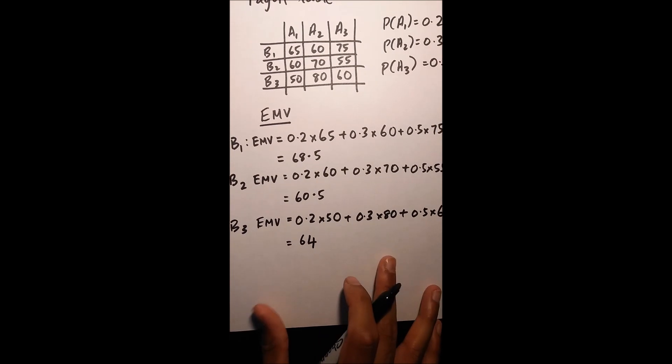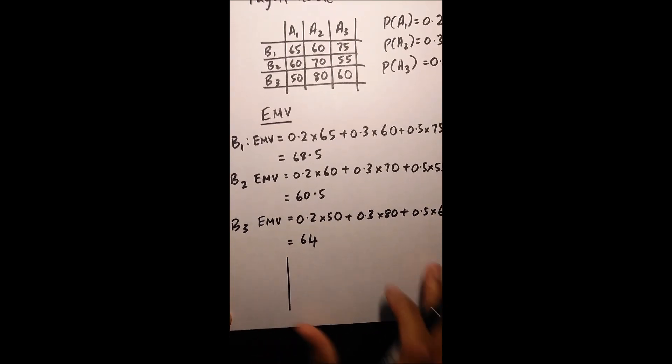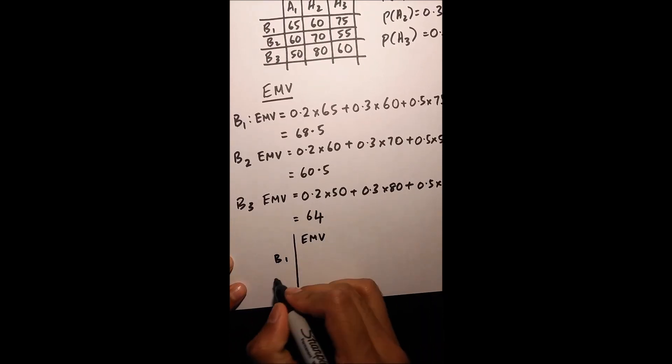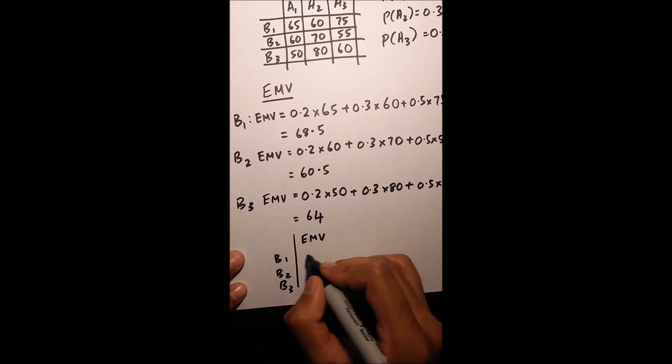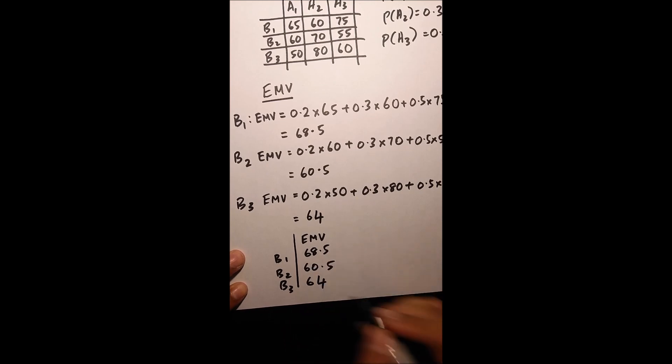Once I find my EMVs, I can put them in a little table. B1, B2, B3: 68.5, 60.5, and 64.